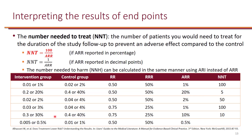If 30% died in the intervention group and 40% in the control group, 0.3 divided by 0.4 is 0.75, so 1 minus 0.75 gives a 25% relative risk reduction. The absolute risk reduction is 40% minus 30% = 10%, and 100 divided by 10% is 10. That means you would need to treat 10 patients with the intervention in order to avoid one death compared to patients who received the control treatment over the period of the study.